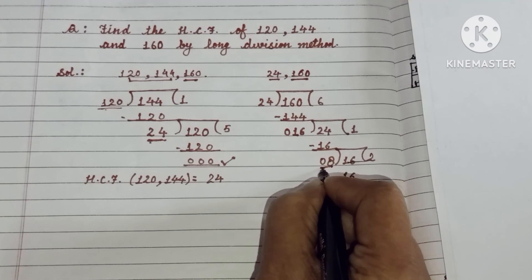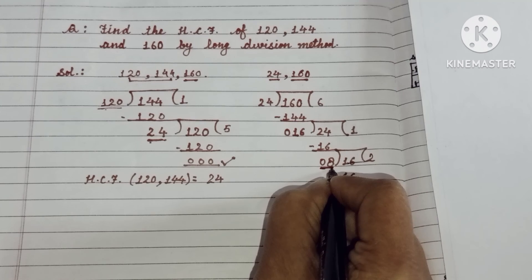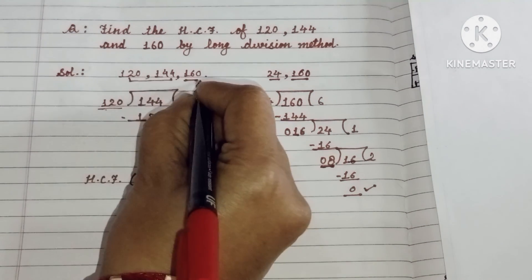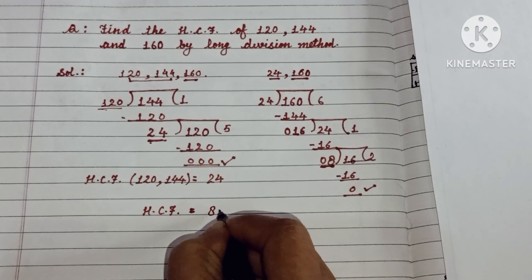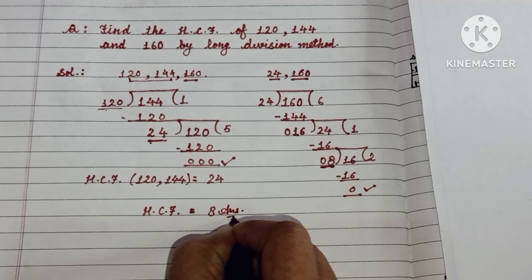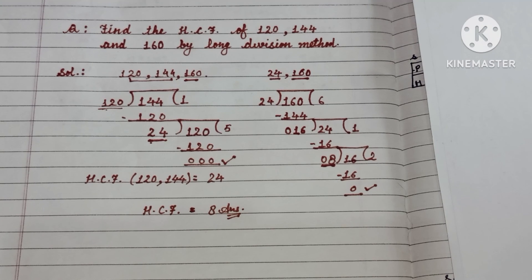That means this last divisor will be the HCF. So HCF of these 3 numbers is 8. Clear bita? 8 will be your HCF. I hope bita ye concept akko clear ho gaya.